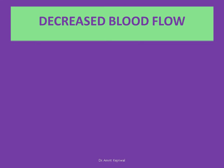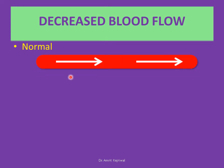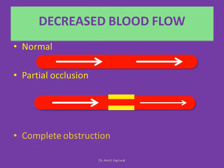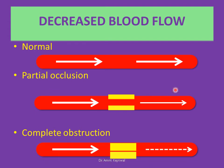Why do people get chest pain? There is a decrease in blood flow. Normal blood flow is laminar. When there is partial occlusion, you can see the arrow becomes thin. And when there is complete obstruction — partial obstruction here and complete obstruction here — very limited blood flow exists, as shown by dotted lines. This decrease in blood flow to the heart causes chest pain.